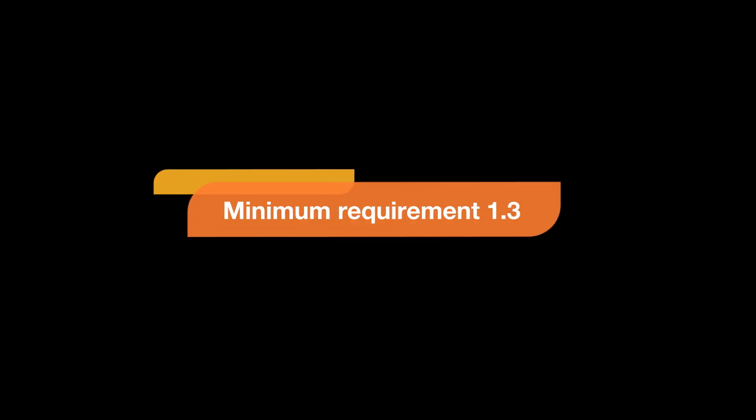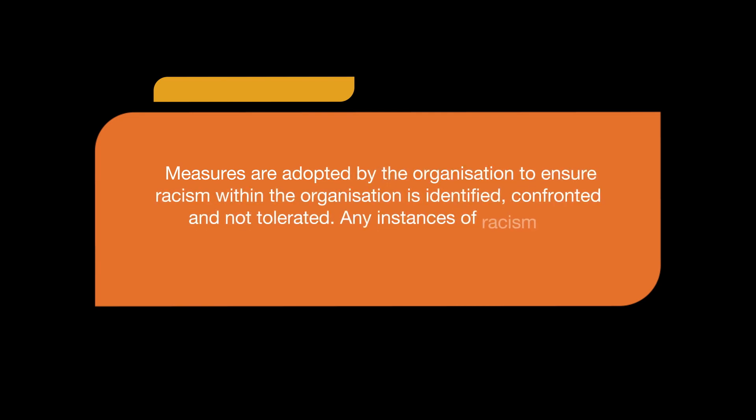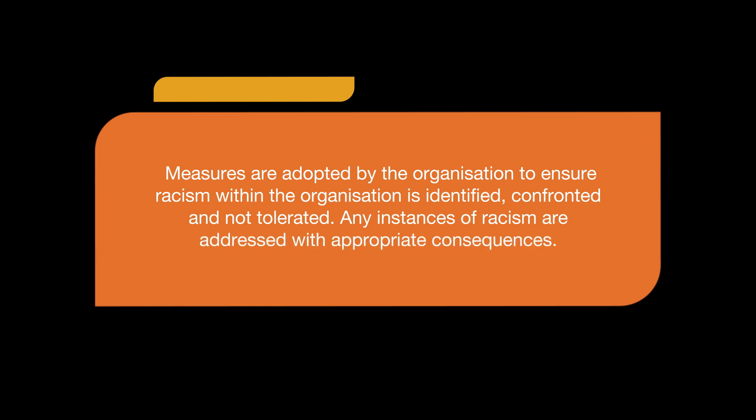Minimum requirement 1.3: measures are adopted by the organisation to ensure racism within the organisation is identified, confronted and not tolerated. Any instances of racism are addressed with appropriate consequences. Racism causes emotional harm that impacts on mental and physical health. Racism is harmful for children and impacts their safety and wellbeing. It can be a form of child abuse. Sadly, the impact of racism can be felt for years. Racism can be harassment, abuse or humiliation.